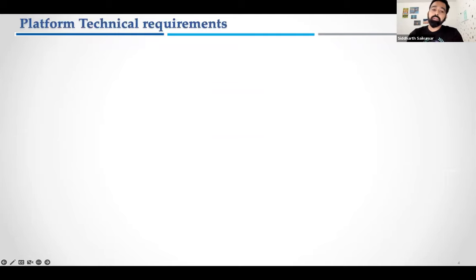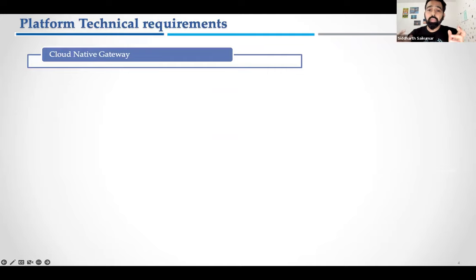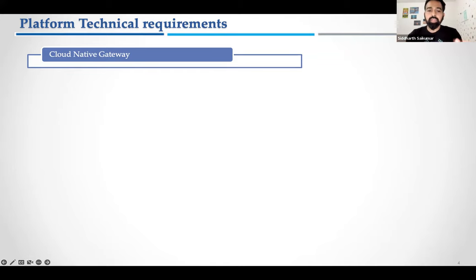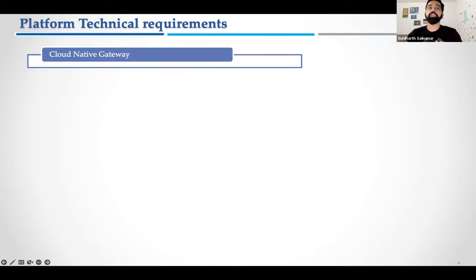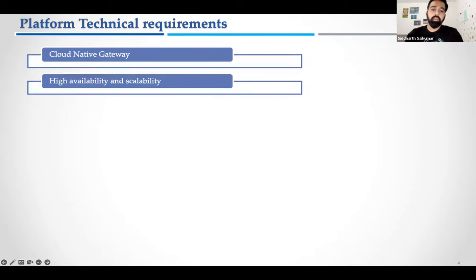Now let's go into the technical requirements — what features do we need in a platform? Cloud nativity is about building and running an application that takes advantage of the distributed computing model that cloud provides. Native apps are designed to exploit scalability, elasticity, resiliency, flexibility, and all the good features of cloud. Your application should be designed to exploit those capabilities.